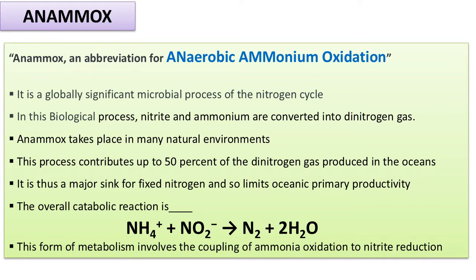Anammox is actually an abbreviation for Anaerobic Ammonium Oxidation. The abbreviation is taken as: 'an' from anaerobic, 'amm' from ammonium, and 'ox' from oxidation. In this process, nitrite and ammonium are converted into dinitrogen gas (N₂), and most importantly, it does not involve any oxygen.